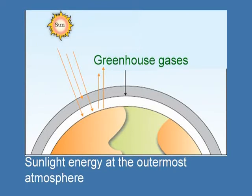The atmospheric cover around the earth acts like a window glass panel. This window glass panel allows most of the solar radiations to enter the earth's surface, but it does not allow the long wave infrared radiations emitted by the earth to escape into space. The outgoing long wave infrared radiations are absorbed by the greenhouse gases.